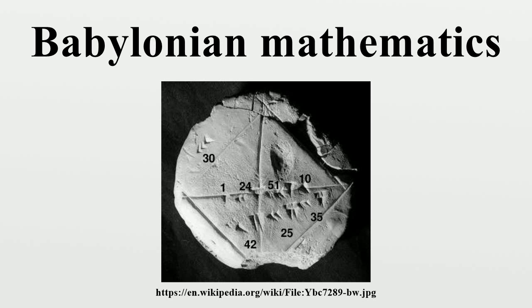The ancient Babylonians had known of theorems on the ratios of the sides of similar triangles for many centuries, but they lacked the concept of an angle measure and consequently studied the sides of triangles instead. The Babylonian astronomers kept detailed records on the rising and setting of stars, the motion of the planets, and the solar and lunar eclipses, all of which required familiarity with angular distances measured on the celestial sphere.